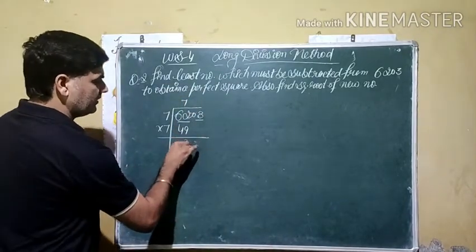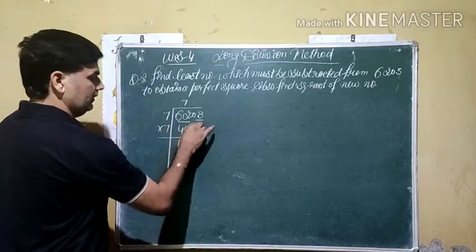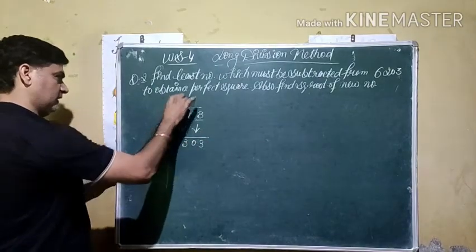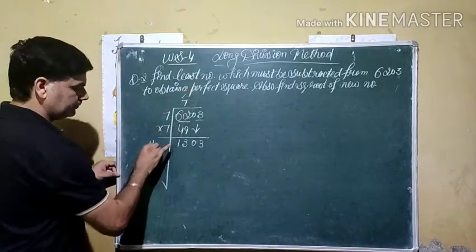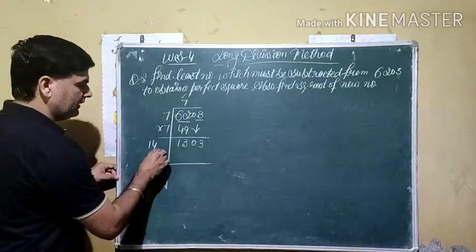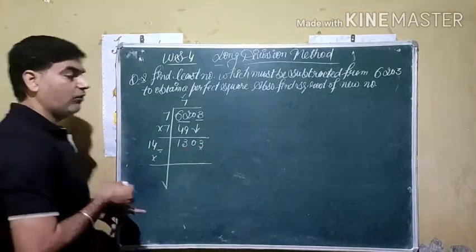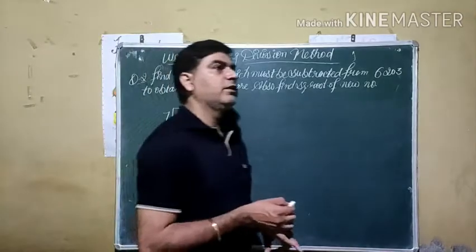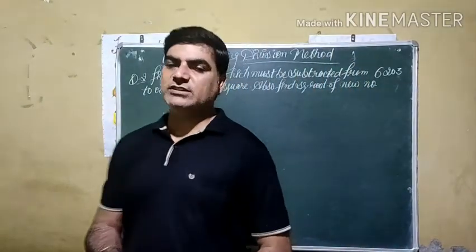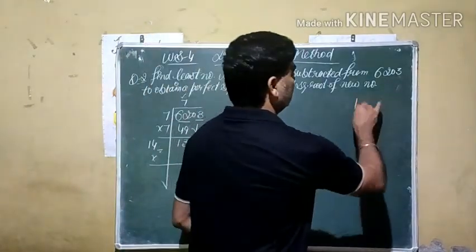Now balance from here is 13, because 12 minus 9 is 3, then 1 borrow from here, 5 minus 4 is 1. Next is 0, bringing down 3, we get 130. Now sum of these two, or double of this, is 14. One digit is dropped according to the procedure.